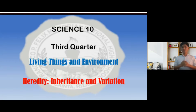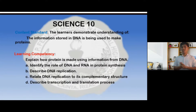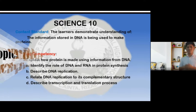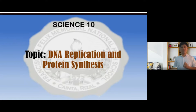Sit back and enjoy learning. Our lesson for today talks about living things and the environment, focusing on heredity, inheritance, and variations. The content standard is: the learners demonstrate an understanding of the information stored in the DNA being used to make proteins. Our learning competencies are: explain how protein is made using information from the DNA; identify the role of DNA and RNA in protein synthesis; describe DNA replication; relate DNA replication to its complementary structure; and describe the transcription and translation process — DNA replication and the processes involved in protein synthesis.